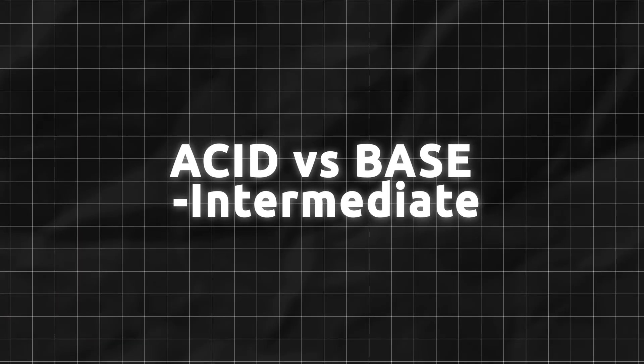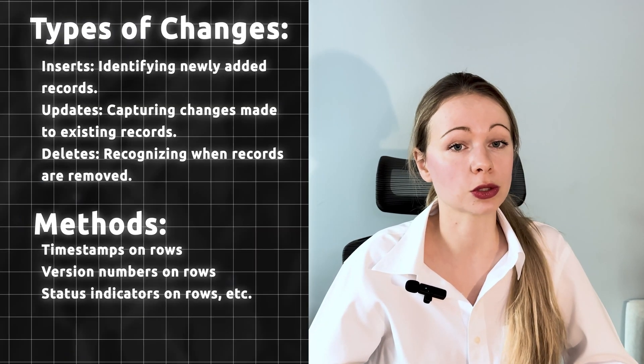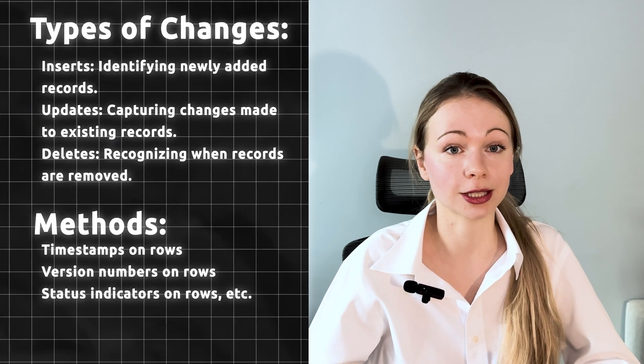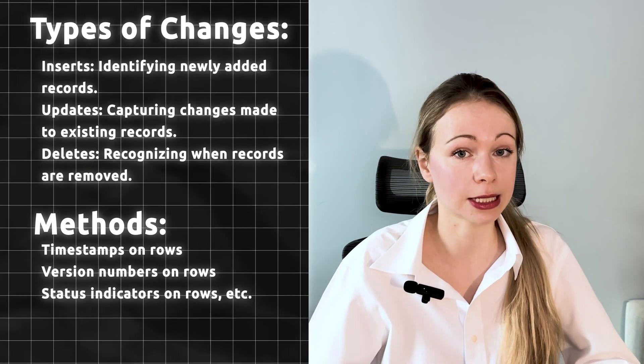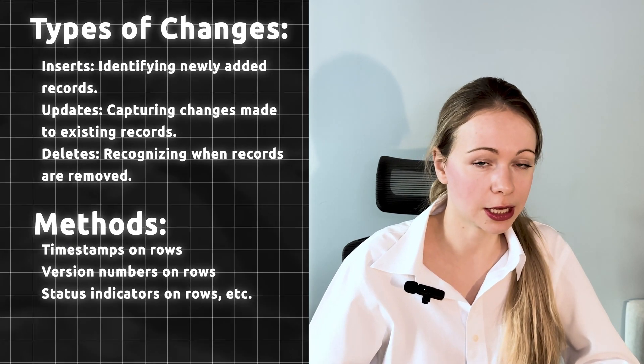Explain ACID versus BASE. ACID principle is typically associated with traditional relational database management systems, where data consistency and integrity are highly important. BASE is often linked to NoSQL databases and distributed systems, where high availability and partition tolerance are prioritized, and strong consistency may be relaxed in favor of availability and partition tolerance. What is CDC? Change data capture is a set of techniques used in databases to capture changes made to the data. The primary purpose of CDC is to track changes in the source data so that downstream systems can be kept in sync with the latest updates. Methods include putting timestamps on rows, version numbers on rows, status indicators, etc.